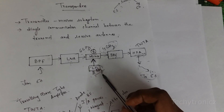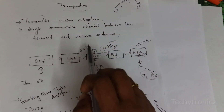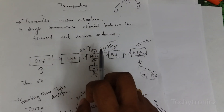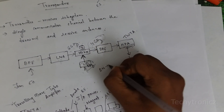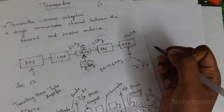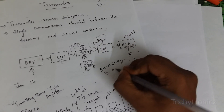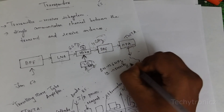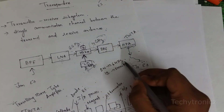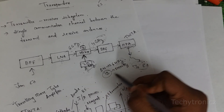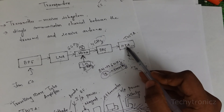This transponder is a series of interconnected units which forms a single communication channel between the transmit and receiving antennas. A transponder bandwidth is 36 MHz, so 12 transponders can be accommodated within a 500 MHz bandwidth. A single transponder bandwidth is 36 MHz, so we can accommodate 12 transponders with a total of 500 MHz.